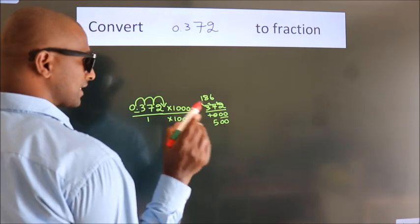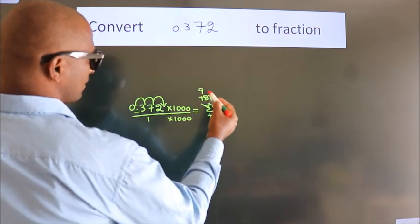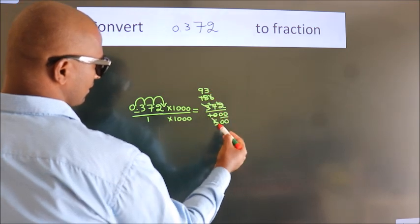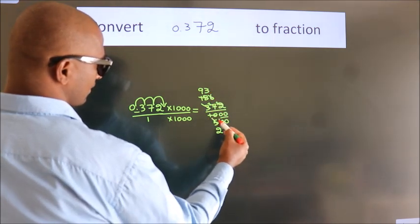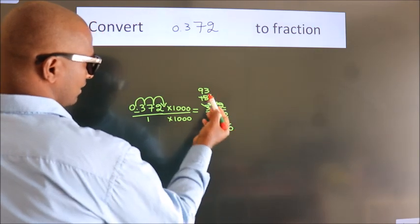I cancel with 2 again. 2 into 186 gives 93, 2 into 500 gives 250.